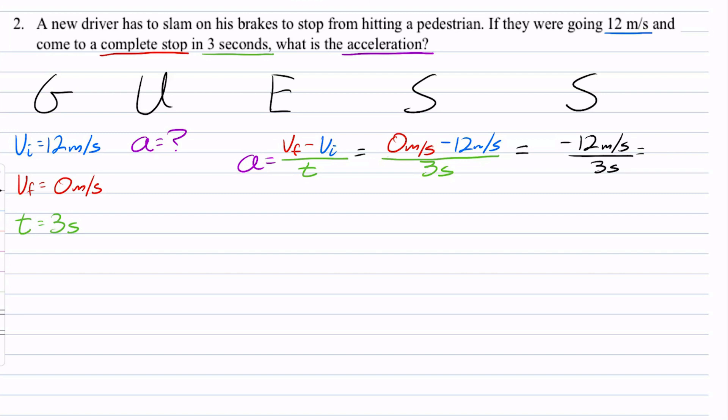I go even further. That gives me negative 4 meters per second over 1 second. I can simplify that even further to negative 4 meters per second per second, or negative 4 meters per second squared.